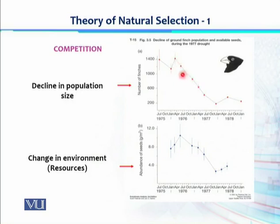Ek big proportion of individuals jo ki 1977 mein reduce ho gaya. So now the resources are gradually increasing and the population is gradually increasing. So that one driving force which is called competition, and this competition is responsible for bringing evolution in.